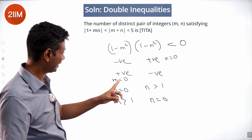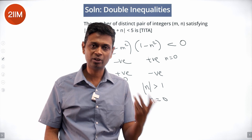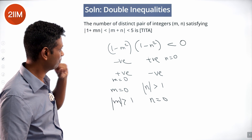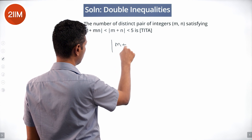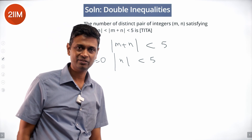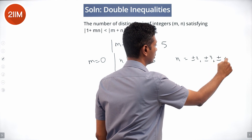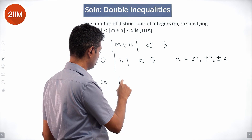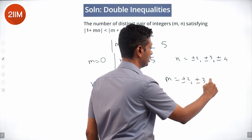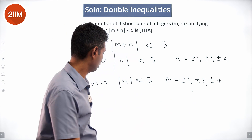With the additional constraint |m + n| < 5: if m = 0, then |n| < 5 and |n| ≥ 2, so n ∈ {±2, ±3, ±4} — 6 values. If n = 0, then |m| < 5 and |m| ≥ 2, so m ∈ {±2, ±3, ±4} — 6 values. Total distinct pairs = 12.